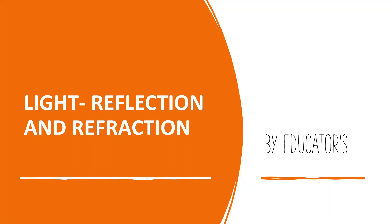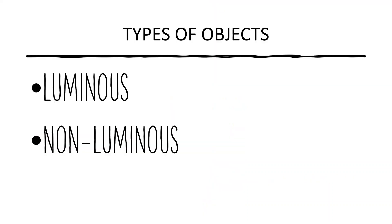Hello everyone, welcome to my channel. Today we are going to discuss about light — everything about light. Let us start the session. First, let us discuss about types of objects. Think of it: you can see objects that emit light on their own, and you can see objects that do not emit light on their own.